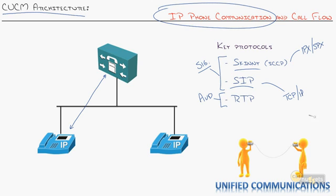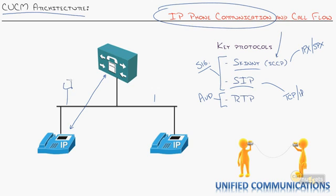I don't see Skinny going away in the short term because phones out there still can't get all their features without using it. But someday we're going to see SIP everywhere. Why is that good? Because now we can blend all these different vendor phones — just like we have Dell, Apple, IBM, and all these different computers on one network because they all communicate using TCP/IP. Soon we're going to have all these different phones, whether Cisco or other brands, all communicating using this standards-based protocol.